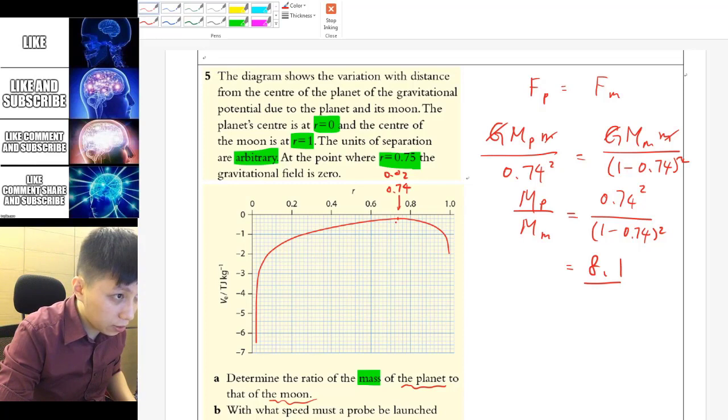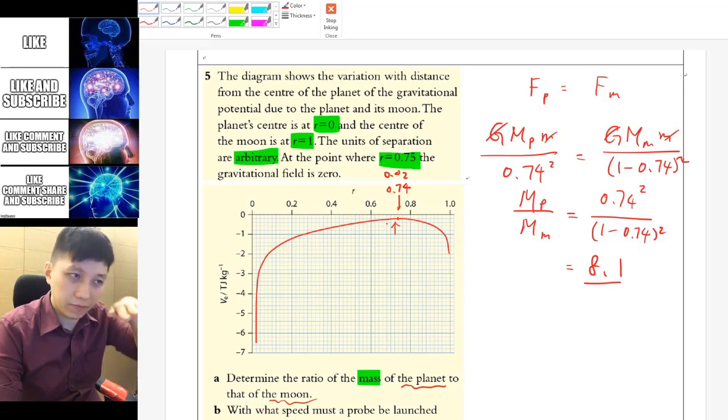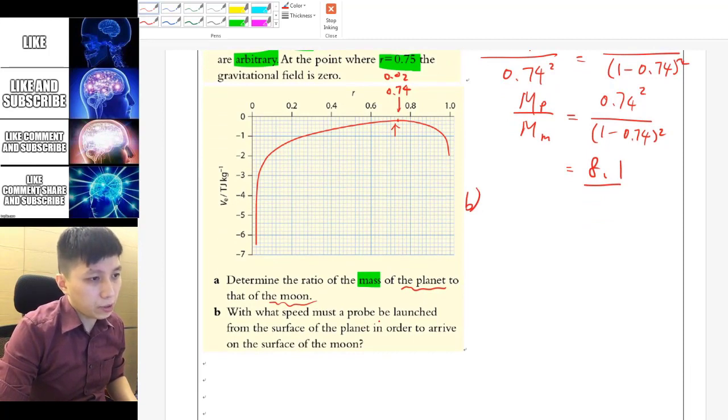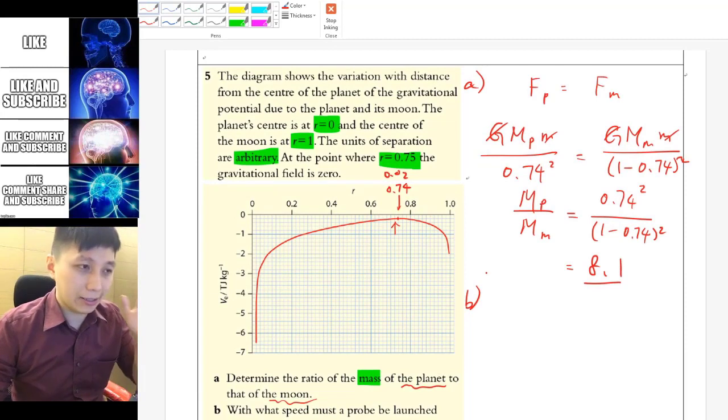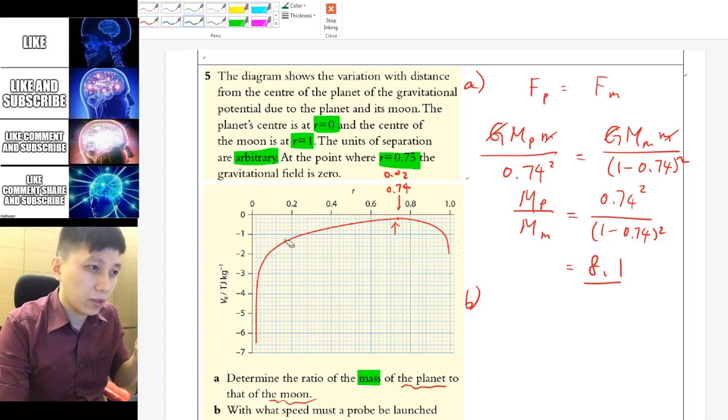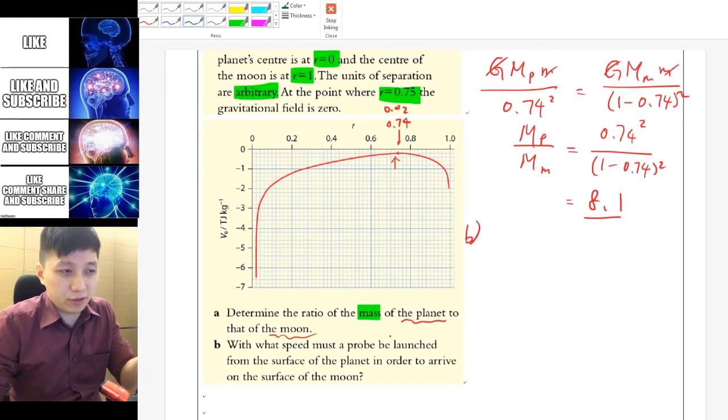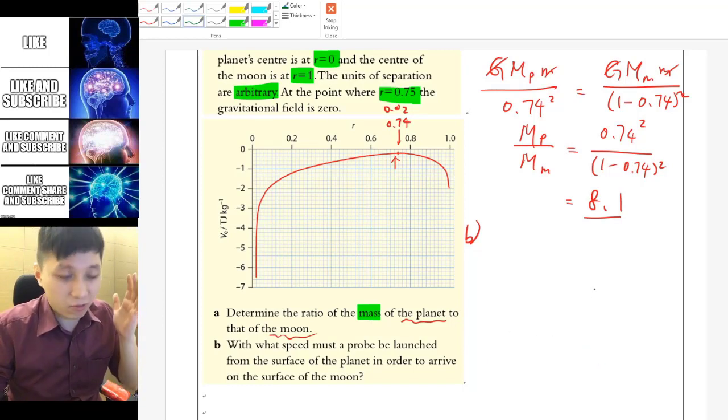Part b it asks you the speed which a probe will be launched from the surface of the planet in order to arrive the surface of the moon so again it's very useful to interpret this as a mountain as I said whenever the object is right here you will try to accelerate this way and then if you want to have the minimum speed you don't want to launch it at a really high speed I mean of course you can just spam you know as much as you can but then that definitely is not what the question want to ask.